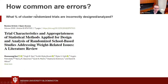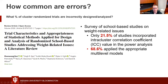Another example of a statistical error, also one we commonly see in our discipline, is errors in cluster-randomized controlled trials. If you randomize groups of participants instead of individuals, you have to account for that clustering and nesting in the analysis. A survey of school-based studies addressing weight found that only 21.5% accounted for clustering in the power analysis and only 68.6% did their final analysis correctly — meaning essentially a third of publications in this area are not doing the analysis correctly.